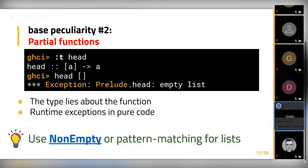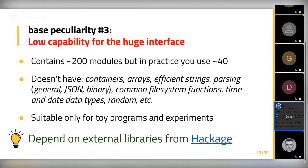Another problem with base is that for a very large library, it has really low capability. It contains approximately 200 modules, but in practice you only use about 40. You may wonder what the other modules do — for example, there's a GHC.Conc.Signal module I have never used. There are a lot of modules you don't use in practice. At the same time, it doesn't have things you use very often, like containers, dictionaries and sets, arrays, efficient string types, parsing utilities, JSON, binary parsing, common file system functions like checking file existence, time and date types, random utilities, and many more.